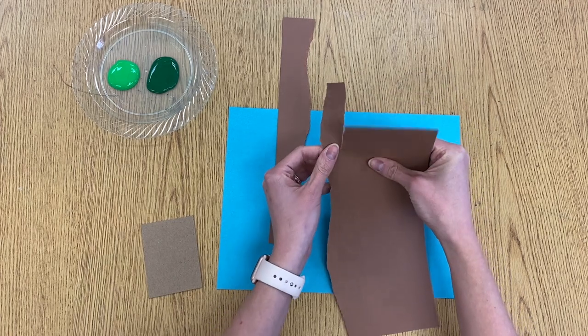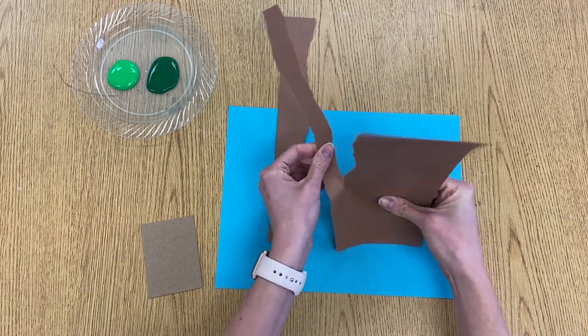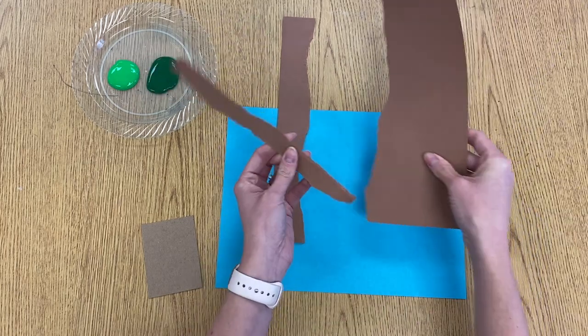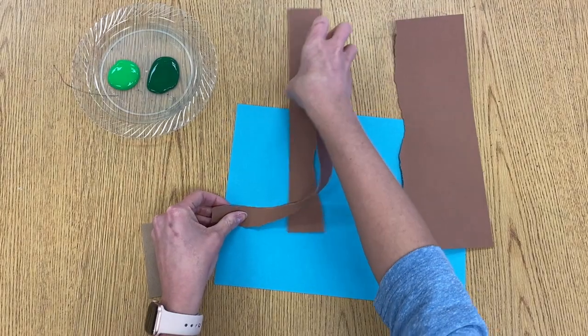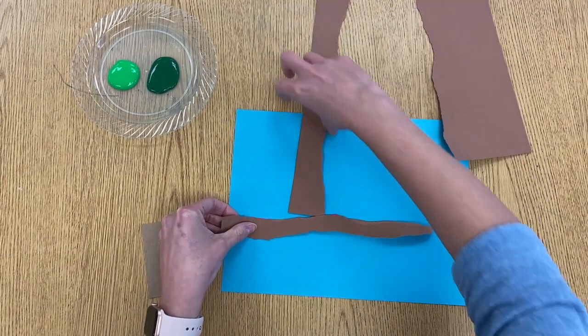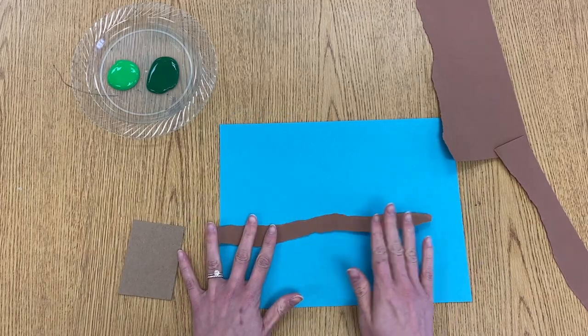They are just kind of wavy and remind us of things in nature. So perfect for our evergreen background. So I'm just kind of tearing some wavy lines. If your paper rips before you're finished tearing, that's totally fine. They do not have to be the same length as the paper. Remember, this is an organic process, not a perfect process.